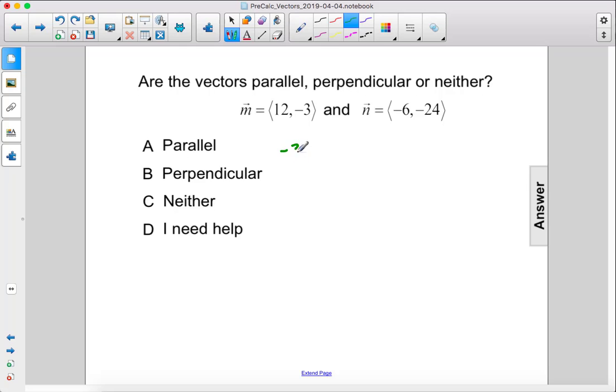The slope of vector m is negative 3 over 12, which is negative 1 fourth. The slope of vector n is negative 24 over negative 6, which is 4.